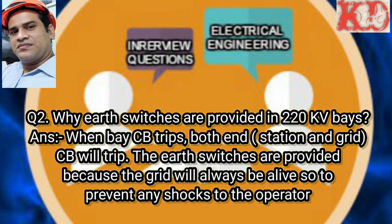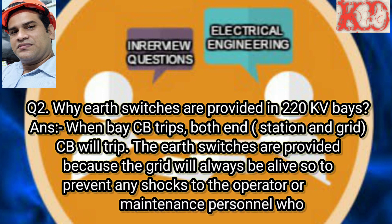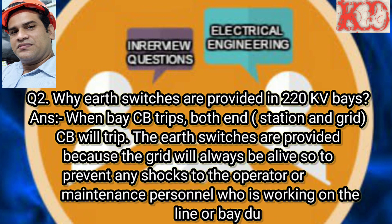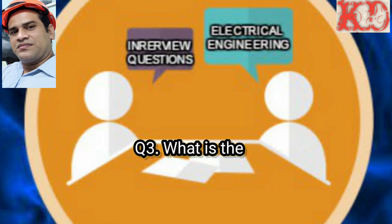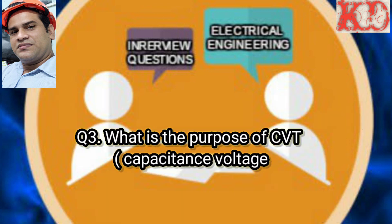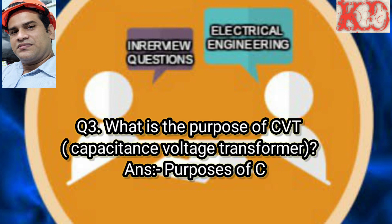Question number 2: Why are earth switches provided in 220 KV? Answer: When a bay CV trips at both ends, the station and grid CV will trip. Earth switches are provided because the grid will always be alive, to prevent any shock to the operator or maintenance personnel working on the line, or to prevent accidental energizing of the bus.